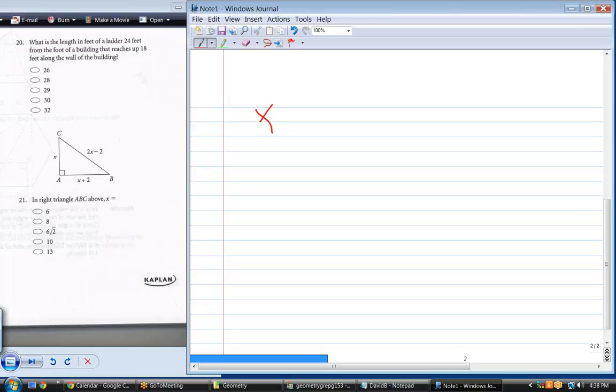So, what equation can I write based on the Pythagorean Theorem? x squared plus the quantity x plus 2 squared equals the quantity 2x minus 2 squared. That's the perfect way to verbalize. Quantity 2x minus 2 squared. Okay. So, can we solve for x?